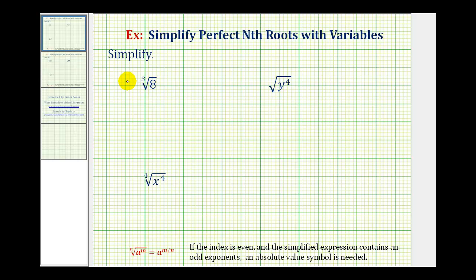So for this first example, we have the cube root of eight, so the index is three. Next, we have the square root of y to the fourth. Because it's a square root, the index is not listed, which means the index is two. And then for the fourth root of x to the fourth, the index is four.